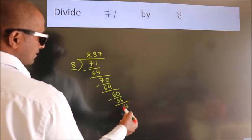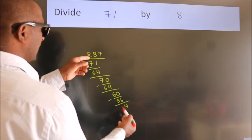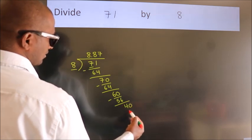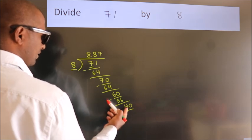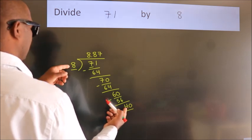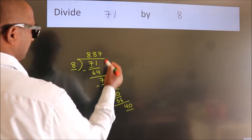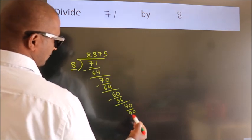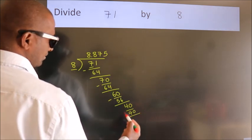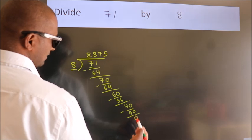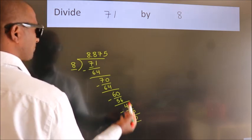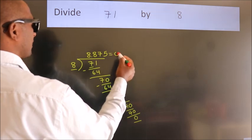After this, we already have the decimal, so directly take 0. So 40. When do we get 40 in the 8 table? 8 times 5 is 40. Now we subtract. We get 0. Here we got remainder 0, so this is our quotient.